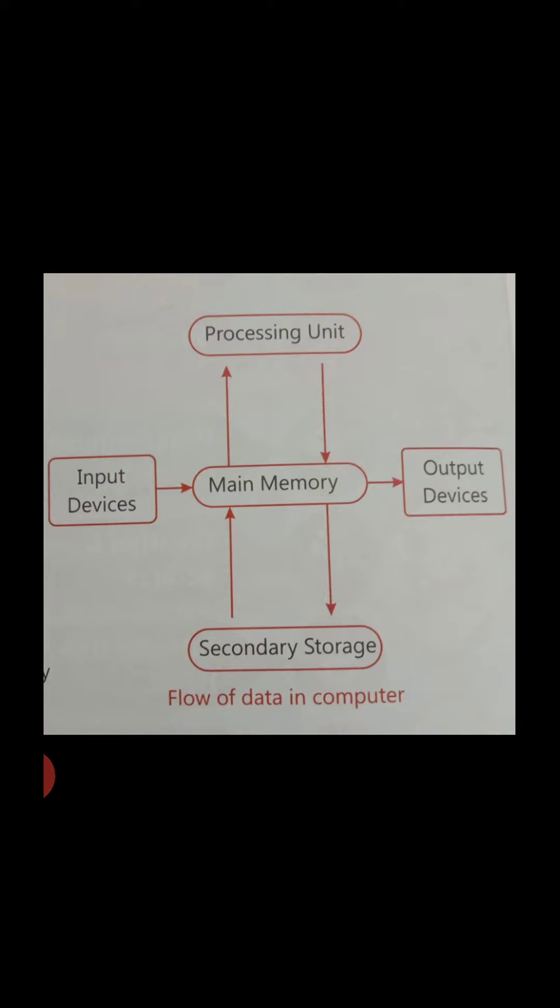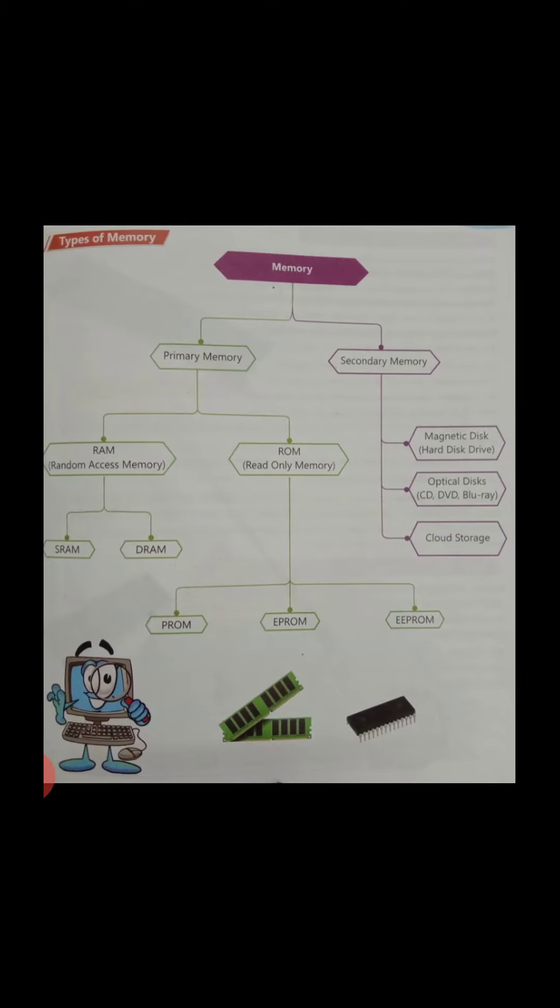Next, EPROM. EPROM is Erasable Programmable Read Only Memory. It is another type of ROM. The stored data in EPROM can be erased. Basically, the data in ROM cannot be erased, but with the help of EPROM, the data can be erased with the help of ultraviolet light and data can be added again.